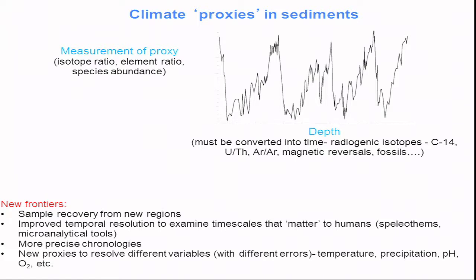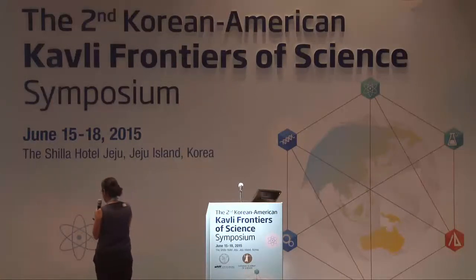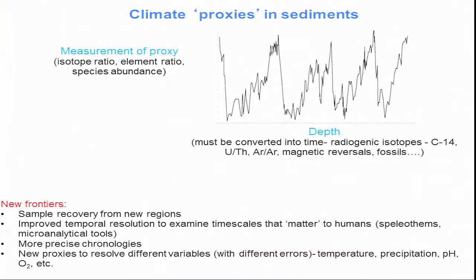Materials such as speleothems — these cave deposits — can accumulate quite rapidly, and they really allow us to develop records to look at timescales that matter to humans. In the poster session today, I saw quite an extraordinary poster by a Korean colleague who was looking at records of paleo-oceanographic variability for the last two million years, where every sample was taken ten years apart — a really remarkable window into past climate variability. We also have the development of microanalytical tools that allow us to, say, from something like a cave deposit, sputter off the surface molecule by molecule, pushing the limits of temporal resolution. And of course there's also the development of more precise chronologies and new chemical tracers that let us resolve different variables subject to different errors, and these are turning out to be quite illuminating.